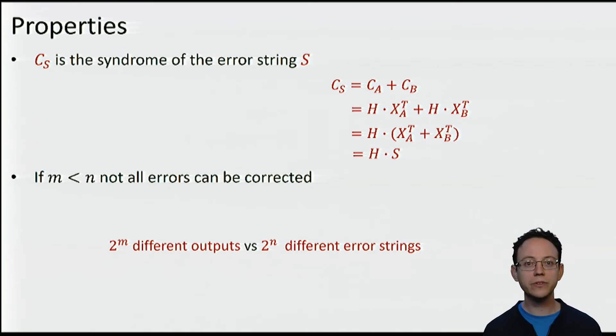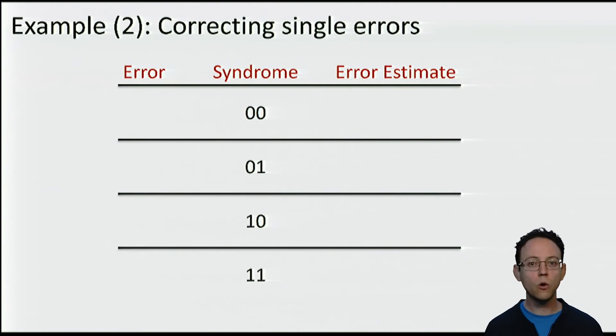But of course, if different errors occur with different probabilities, we might be satisfied if we correct the most likely errors. So, now let us go back to our example. We defined the encoding function, but we have not yet completed the description of the decoder. For this, we need to make explicit the estimation function. There are 4 different syndromes, and we will assign as an error estimate for each syndrome the following strings. For 00, we choose 000. For 01, we choose 001. For 10, we choose 100, and for 11, we choose 010.